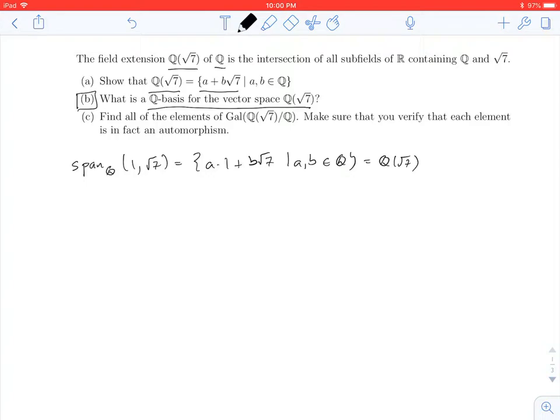However, it's going to be even easier than that, because we know that a basis is going to be no more than two vectors long, because we have a spanning list that's only two long. And if it was only one long, then that would mean that Q adjoin the square root of 7 was a one-dimensional vector space over Q.